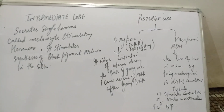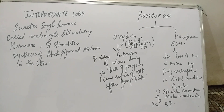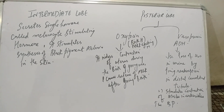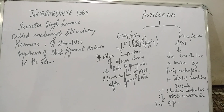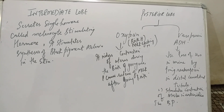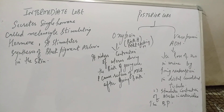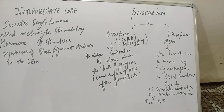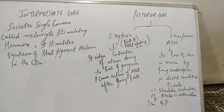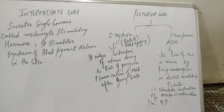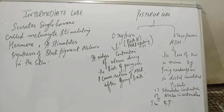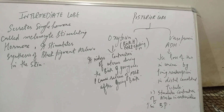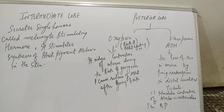The intermediate lobe secretes a single hormone called melanocyte stimulating hormone. It stimulates the synthesis of the black pigment melanin in the skin. The posterior lobe secretes two hormones: oxytocin and vasopressin.